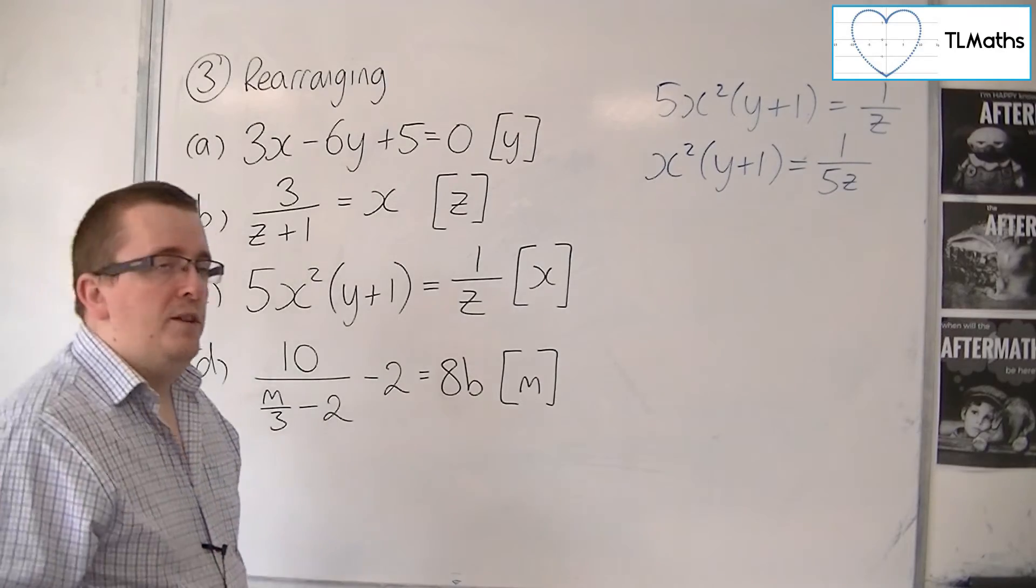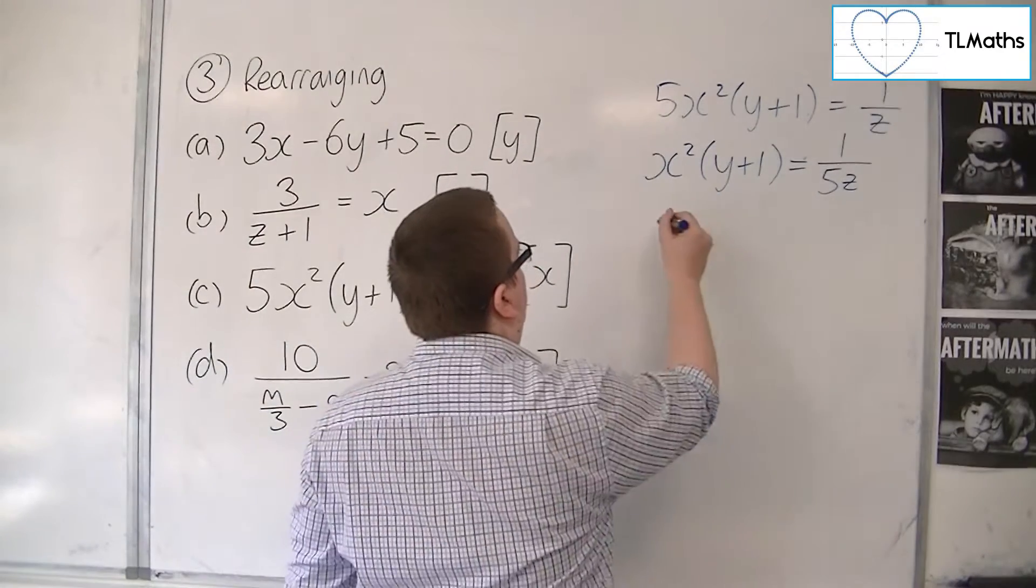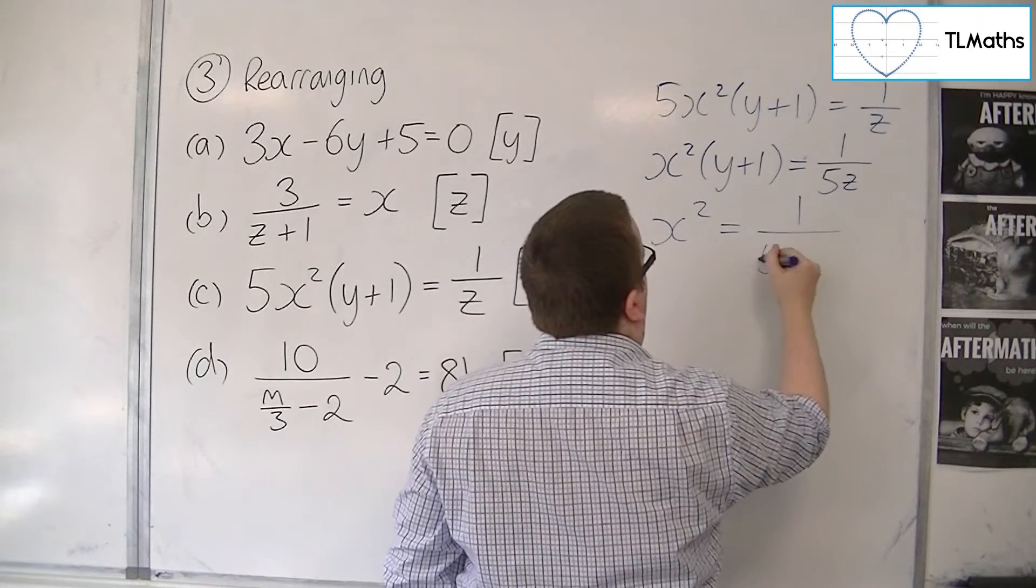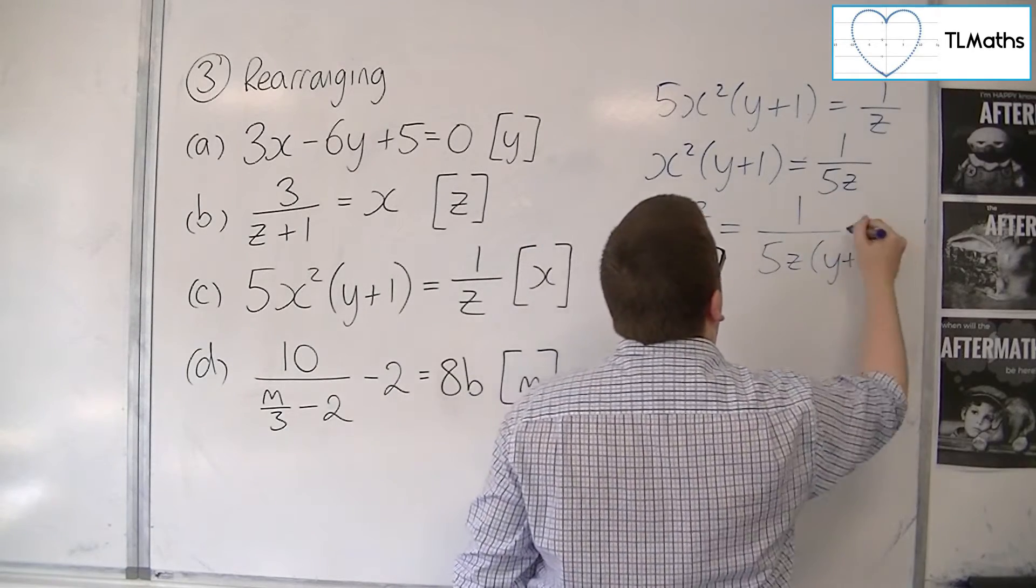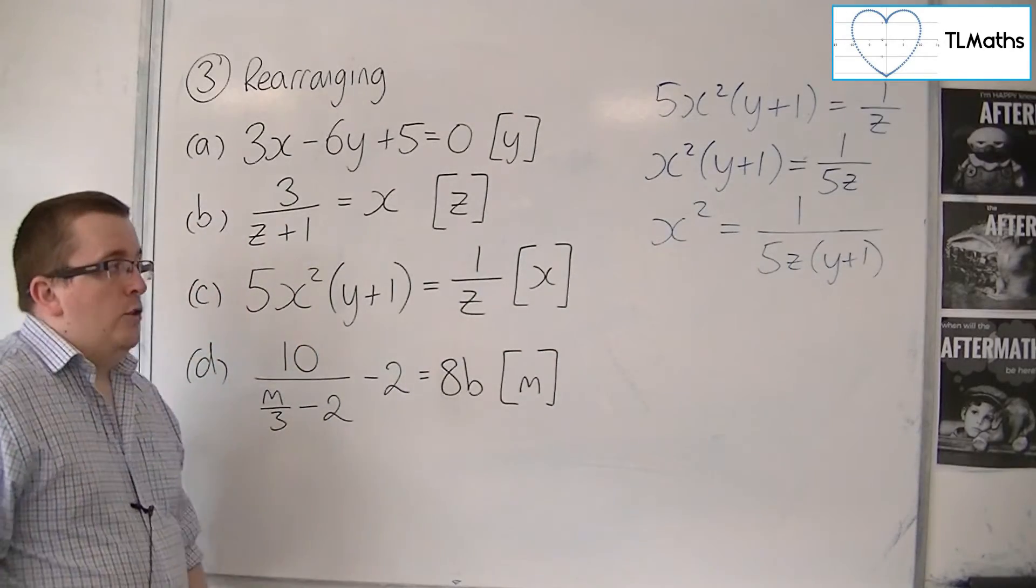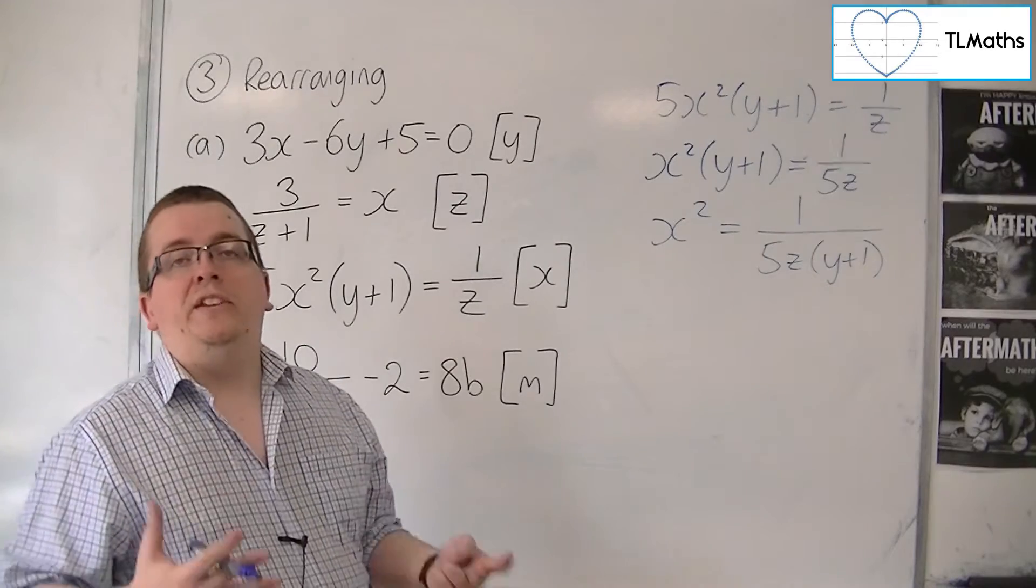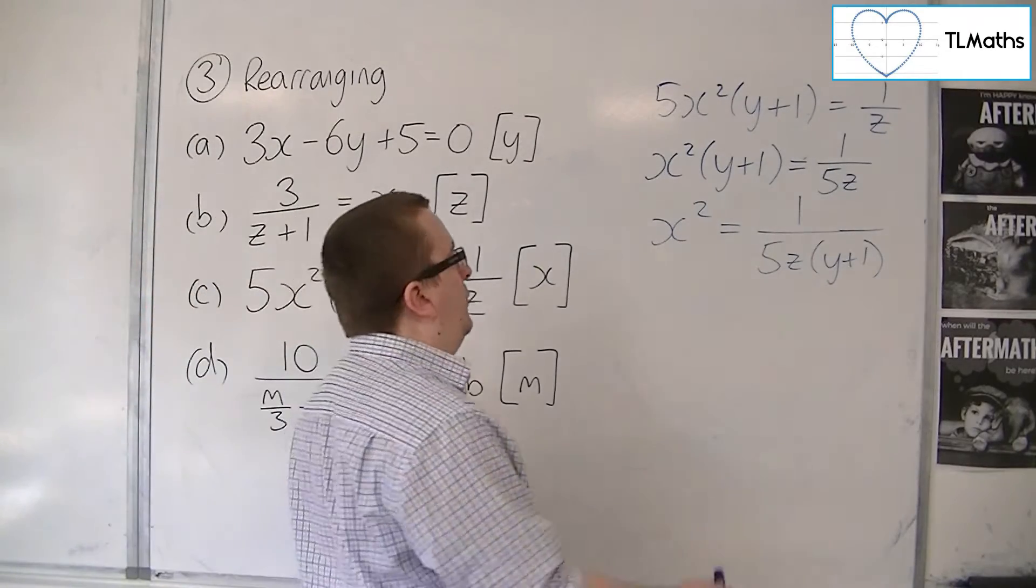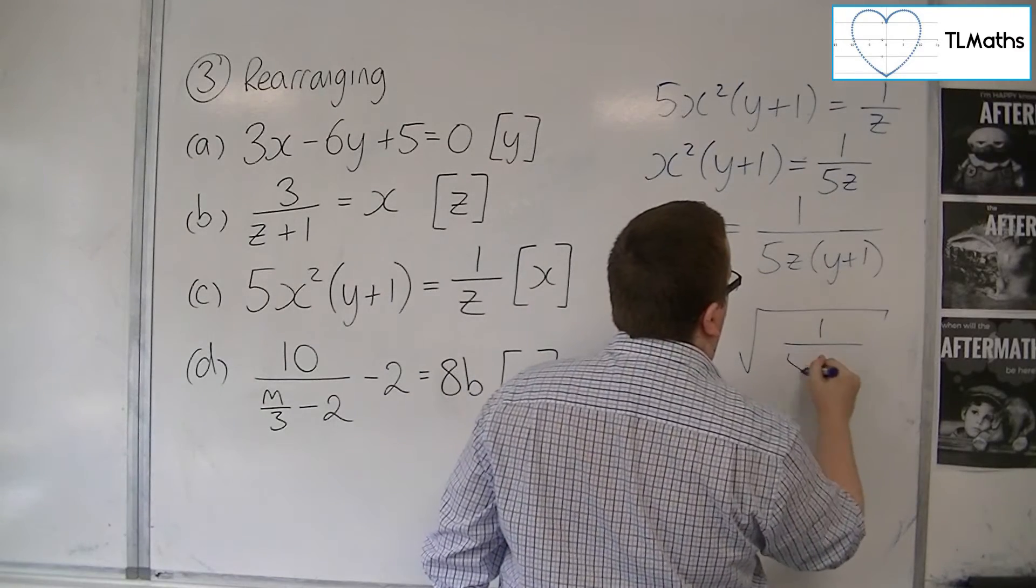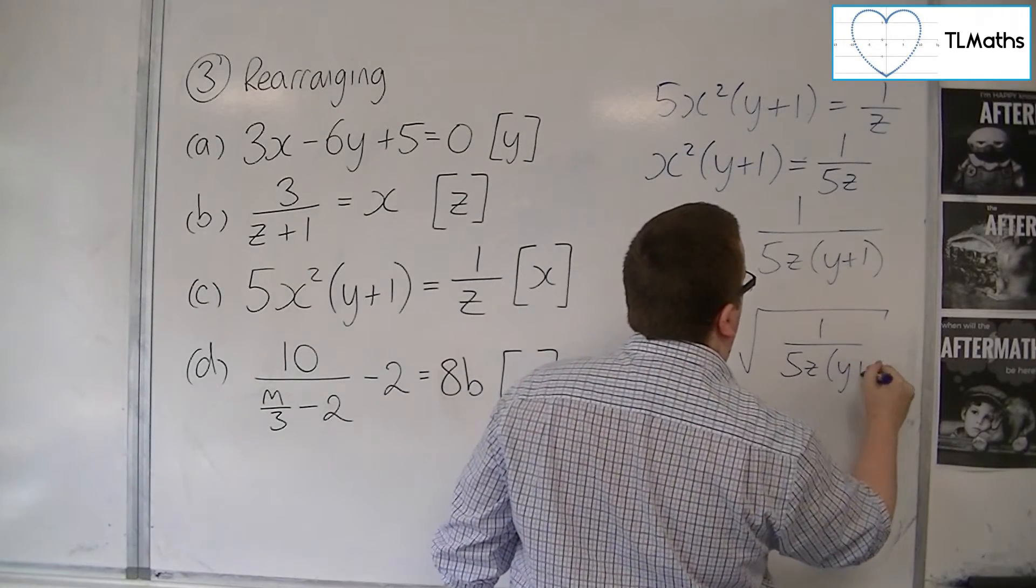I would then divide both sides by Y plus 1. So the Y plus 1 now also appears in the denominator. And then in order to get X equals, I need to square root both sides. So X is equal to the square root of 1 over 5Z, Y plus 1.